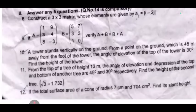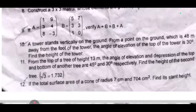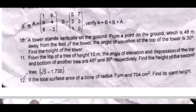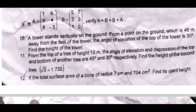If the height of the tower is 30 meters, the angle of elevation and depression from the top and bottom of another tree are 45 degrees and 30 degrees respectively. Find the height of the second tree. Use root 3 equals 1.73.